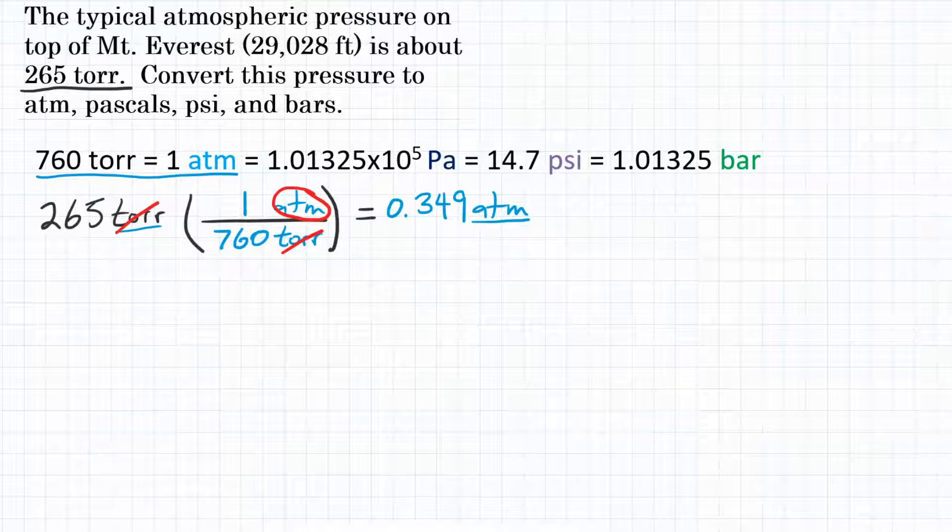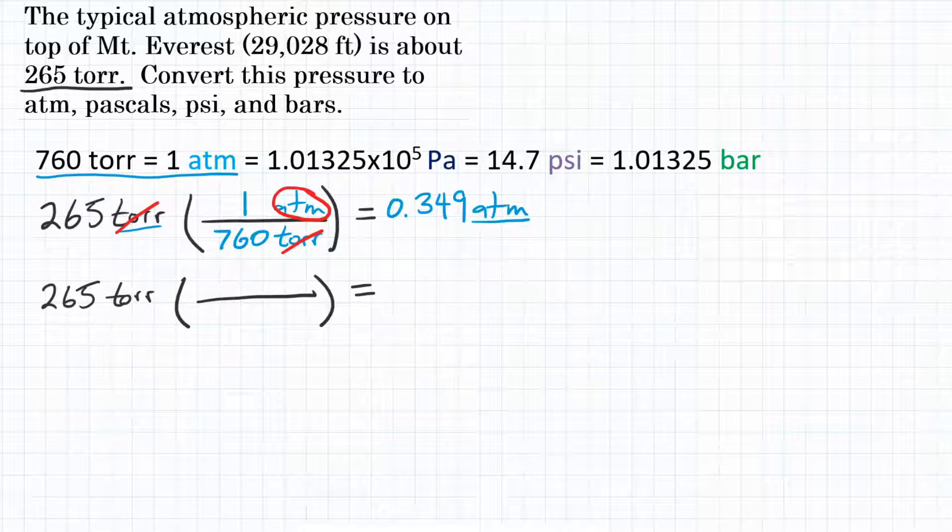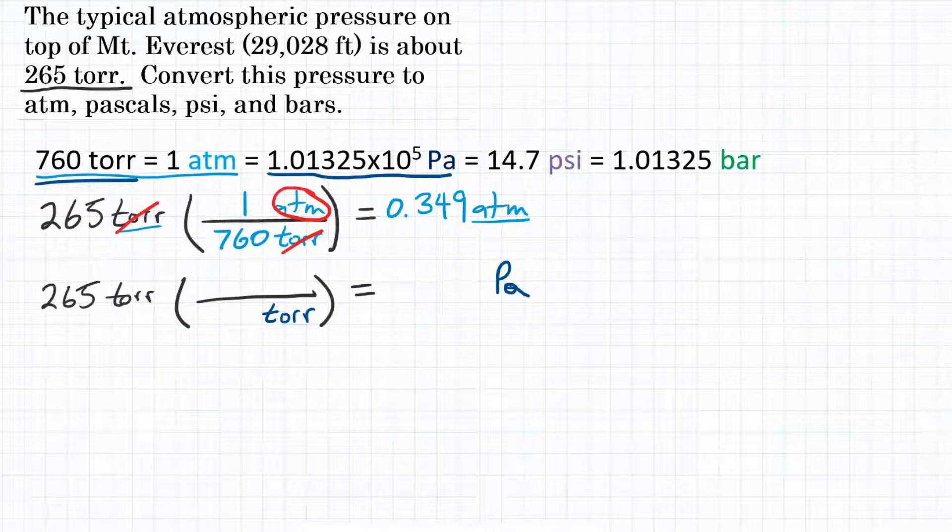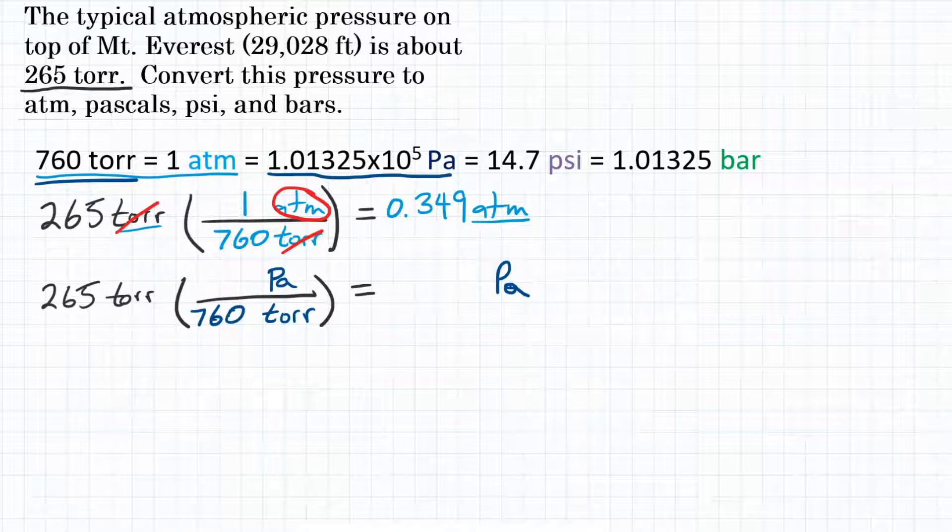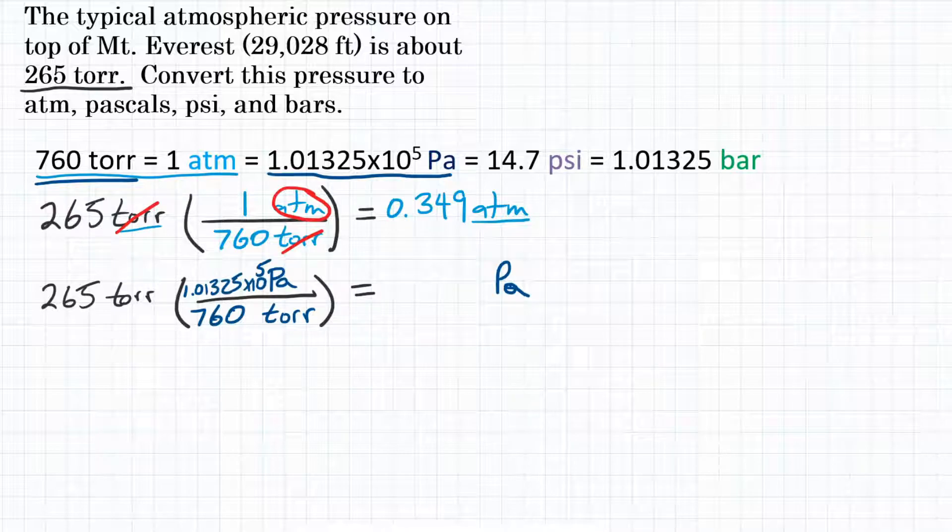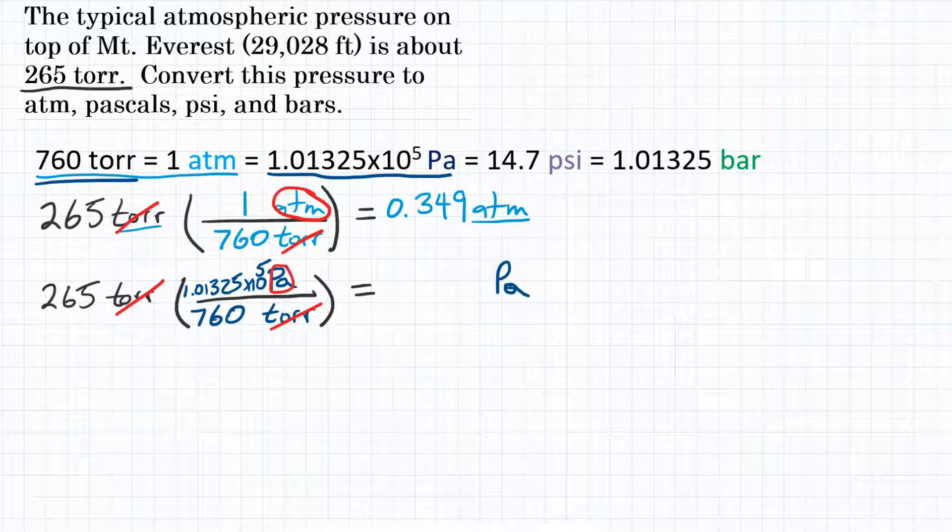Next one, we are looking at, again, starting with 265 torr, multiplying by a conversion factor, and that will get us to so many pascals. What's the relationship between torr and pascals? Well, 760 torr is equal to 1.01325 times 10 to the 5th pascals. So we will again have torr as the unit on bottom of our conversion factor, but this time we will have pascals on top, and then we will use that relationship we just stated, where 760 torr is equal to 1.01325 times 10 to the 5th pascals. Looking at our units, torr will again cancel out, and we are left with pascals. So we can do the math.